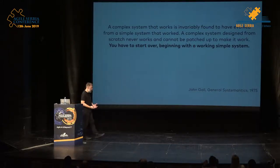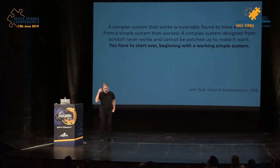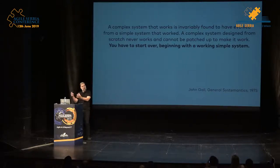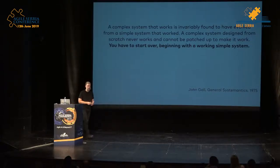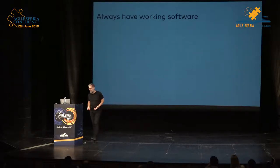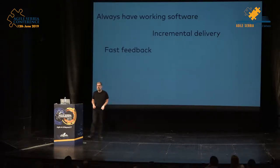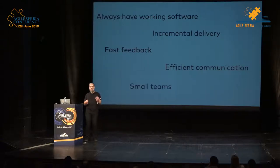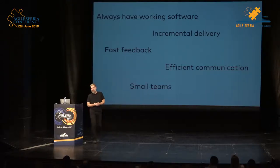If you look at this definition from a system design book — not software architecture specifically — you notice that the idea of evolving things, of growing software, is very important from a purely technical perspective. Regardless of human dynamics or delivering value to clients, things that people value in modern software development — always having working software, delivering incrementally, getting fast feedback, having efficient communication and small teams — can all nicely be related to the attributes of the system you're actually building. We all want the same things, and we cannot have one without looking at the other.